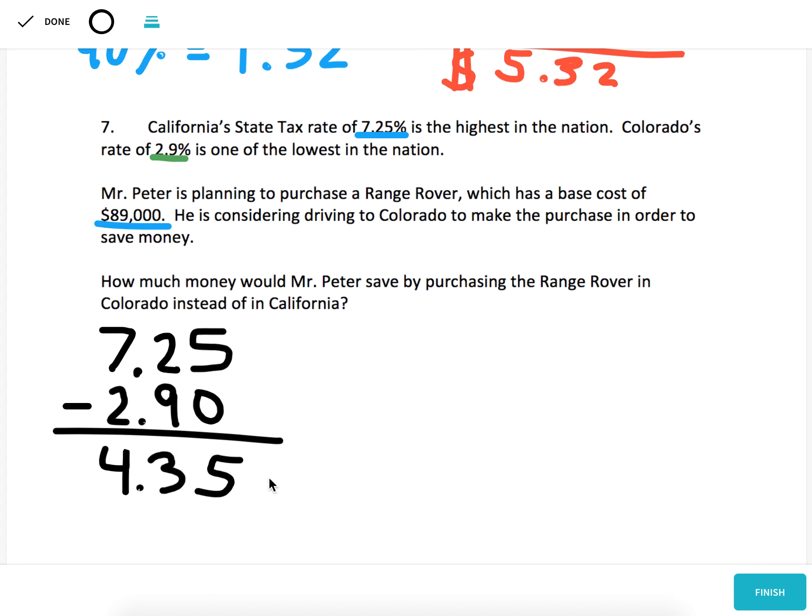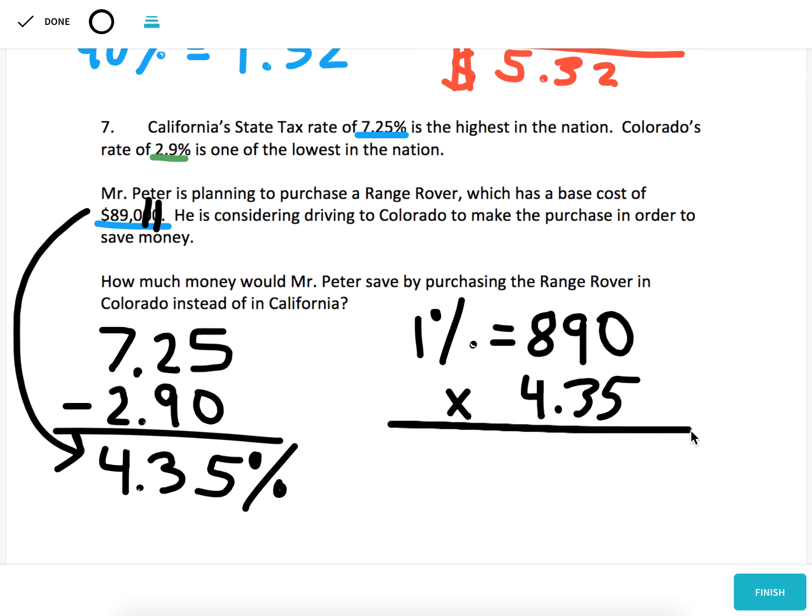So 4.35% is how much lower Colorado's tax rate is than California's. So if we just multiply 89,000 by 4.35%, we're going to find how much I save. And a fast way to do that is let's find 1% of 89,000, which we can take off two zeros, is $890, and then we're going to multiply by the percent we're looking for, 4.35. And now I'm going to use a calculator to do this real quick. We would get $3,871.50. So doing the subtraction at the start of our problem allowed us to only have to multiply one time instead of twice and then subtract at the end.